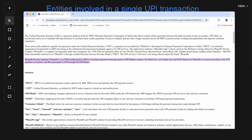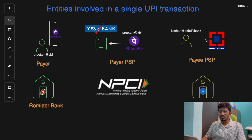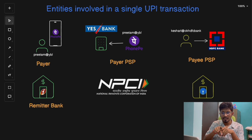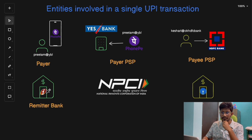For example, PhonePe has partnered with Yes Bank, ICICI Bank, etc. So Yes Bank is a PSP of PhonePe. Similarly, Google Pay is partnered with Axis Bank, HDFC Bank, and uses them as its PSP. So the PSP for VPA 'pritham@ybl' is Yes Bank Limited. The PSP bank acts as a gateway between the UPI app and the user's bank — it authorizes and routes UPI transaction requests, creates and manages your VPA, and facilitates linking bank accounts to the UPI app.